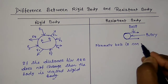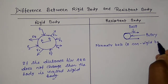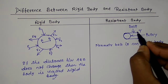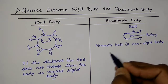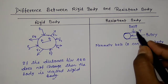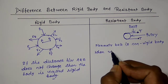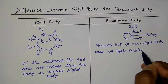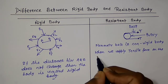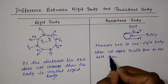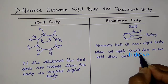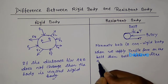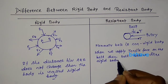But when you apply tensile force T on the belt, then the belt becomes a rigid body. When we apply tensile force on the belt, then the belt behaves like a rigid body.